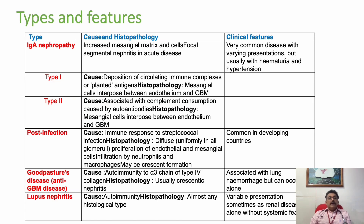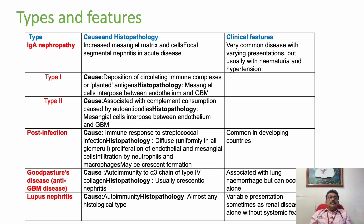Other than post-streptococcal glomerulonephritis, there are some more important types. One important condition is IgA nephropathy — a very common disease with varying presentation, but usually presenting with hematuria and hypertension, increased mesangial matrix and cells, and focal segmental nephritis in acute disease as the classical finding.